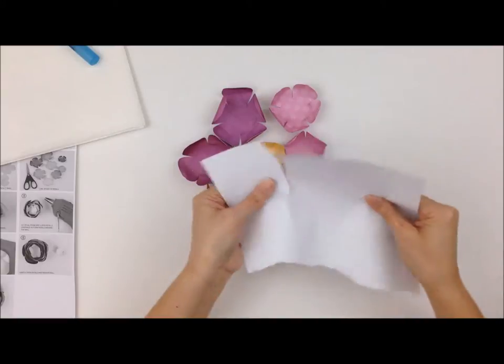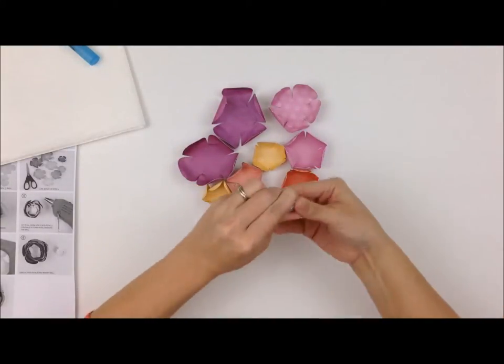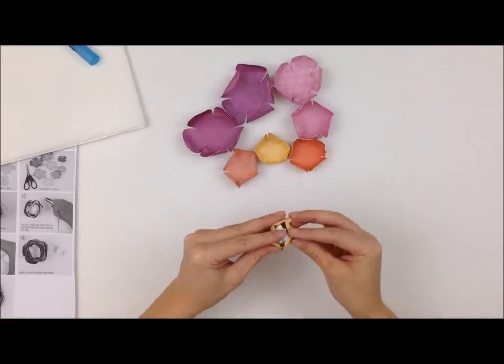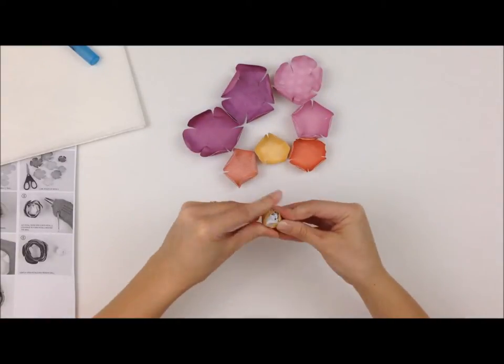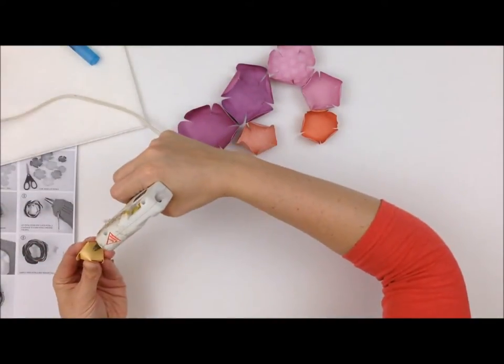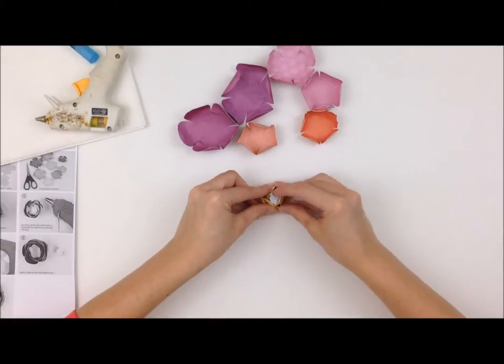The next step is to take a piece of paper and roll it into a tight little ball and this is so that as you're putting the layers together the flower is going to keep its shape and you're not going to end up crushing the smaller flower layers as you're adding the larger ones. So just take a little bit of hot glue and secure that layer to the next.